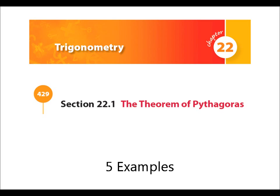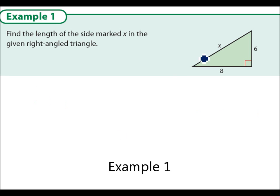Here's five examples of Pythagoras' Theorem. Find the length of the side marked x in the given right-angled triangle.